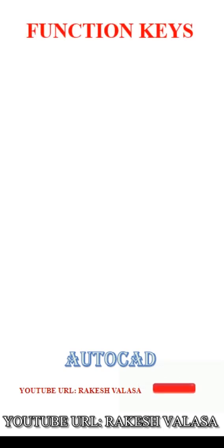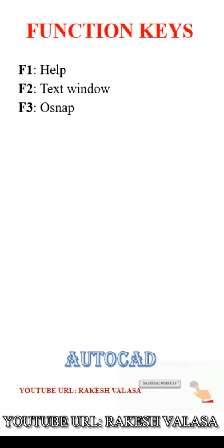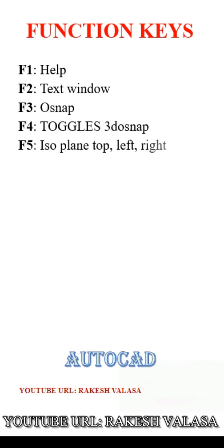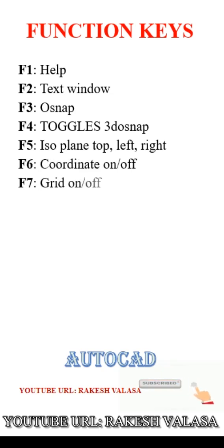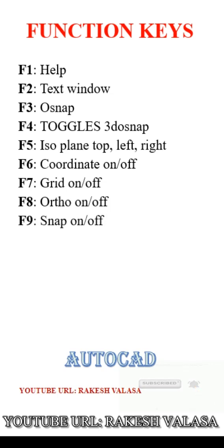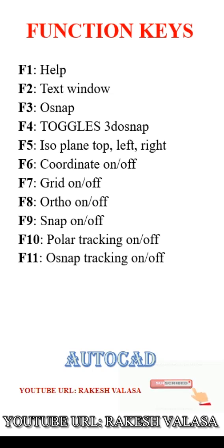Most important shortcut keys in AutoCAD software. First one: function keys. F1 help, F2 text window, F3 O-snap, F4 toggles 3D O-snap, F5 isoplane top left right, F6 coordinate on/off, F7 grid on/off, F8 ortho on/off, F9 snap on/off, F10 polar tracking on/off, F11 O-snap tracking on/off, F12 dynamic input.